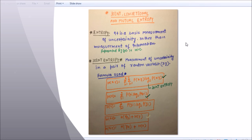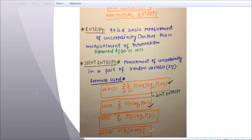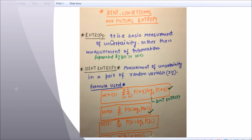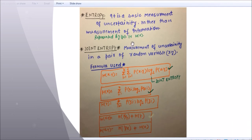Please keep patience and keep watching. So entropy — the types of entropy are: joint entropy, conditional entropy, and mutual entropy. Entropy is a basic measurement of uncertainty rather than measurement of information. It is the measurement of uncertainty.